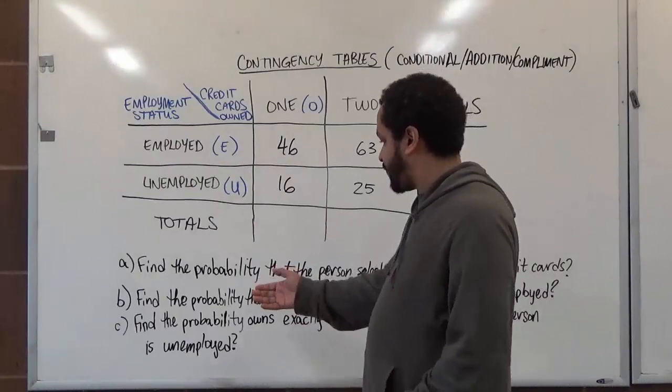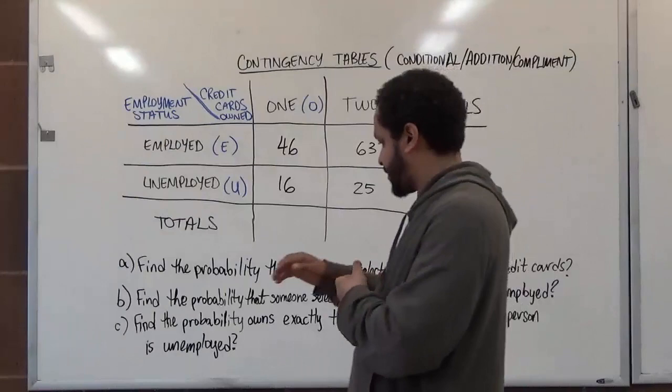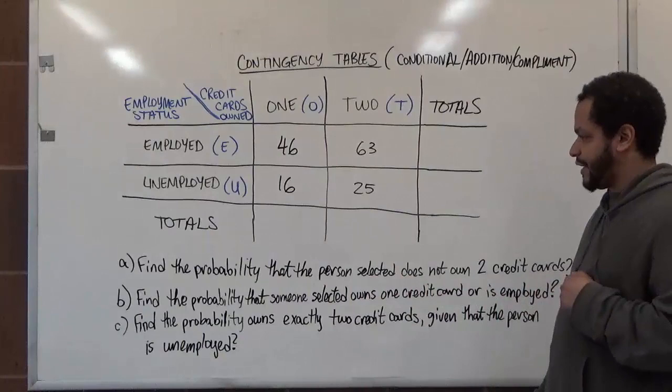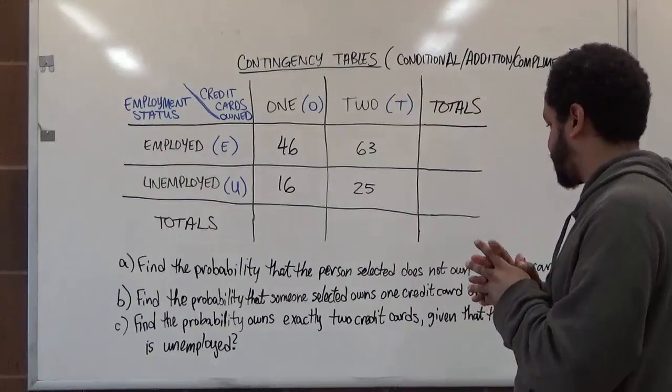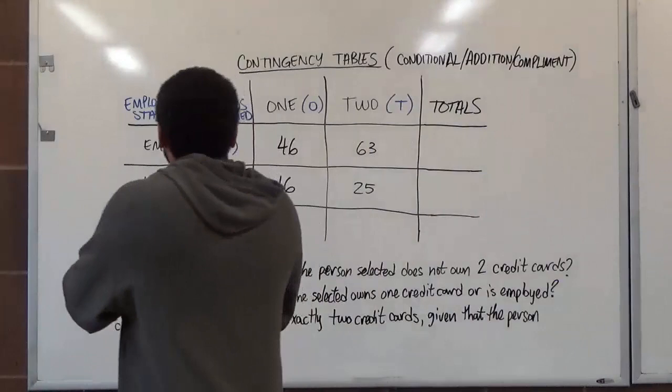In the first of three problem sets: A) find the probability that the person selected does not own two credit cards; B) find the probability that someone selected owns one credit card or is employed; and C) find the probability that the person selected owns exactly two credit cards, given that the person is unemployed.